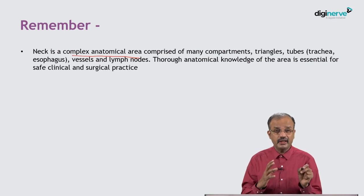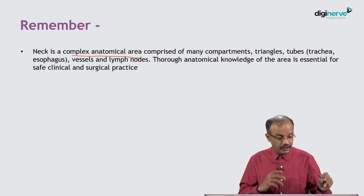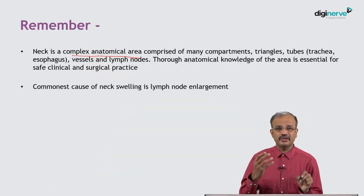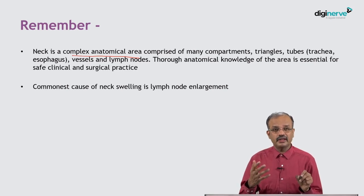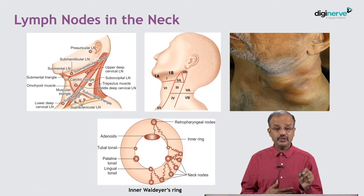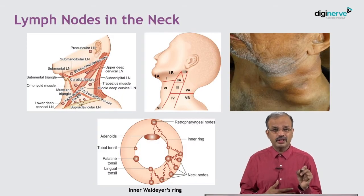You should have a clear idea about the surgical anatomy of the neck. The commonest cause of neck swelling is a lymph node. There are many structures — arteries, trachea, esophagus, muscles, nerve bundles, soft tissues — but the commonest cause of neck swelling is lymph node enlargement.